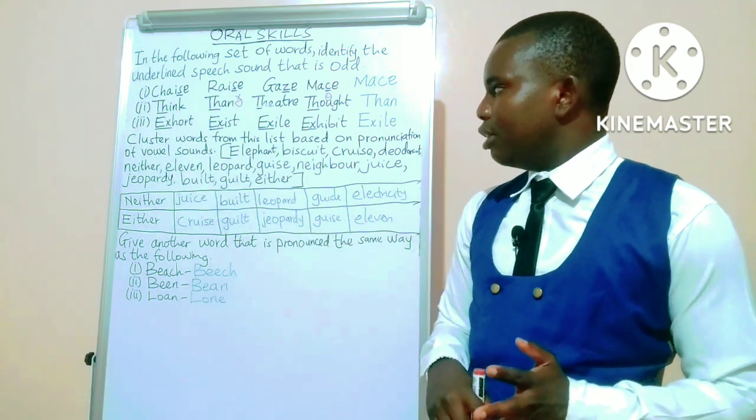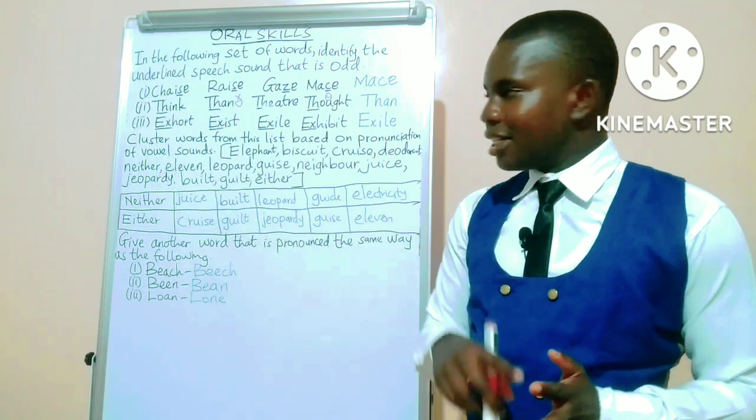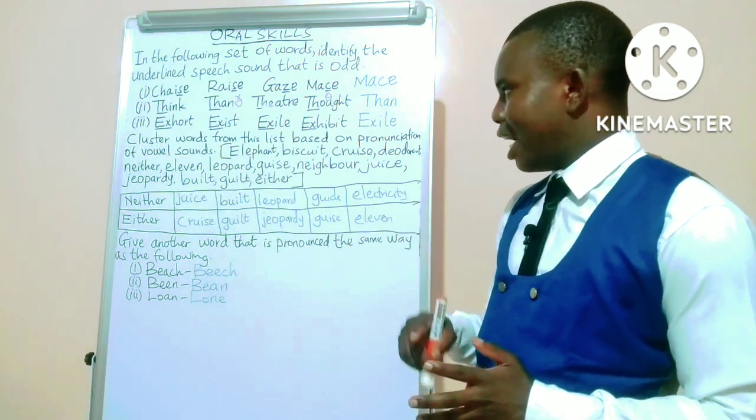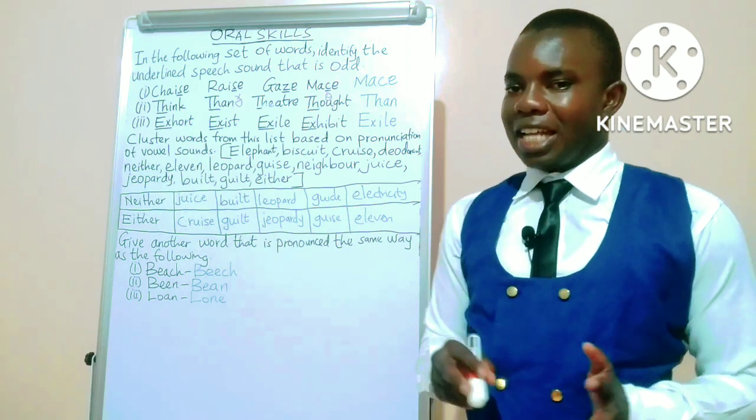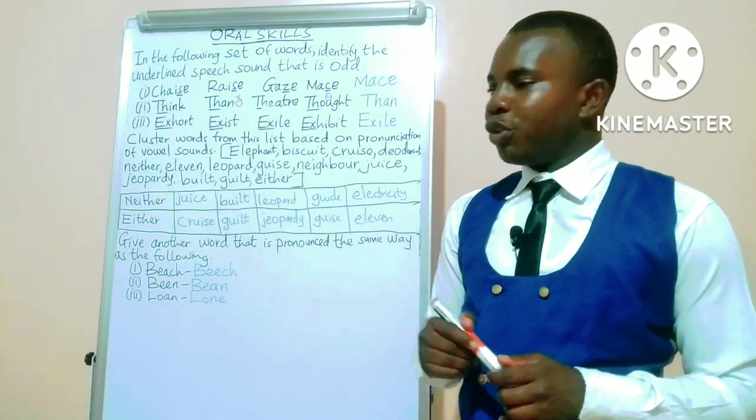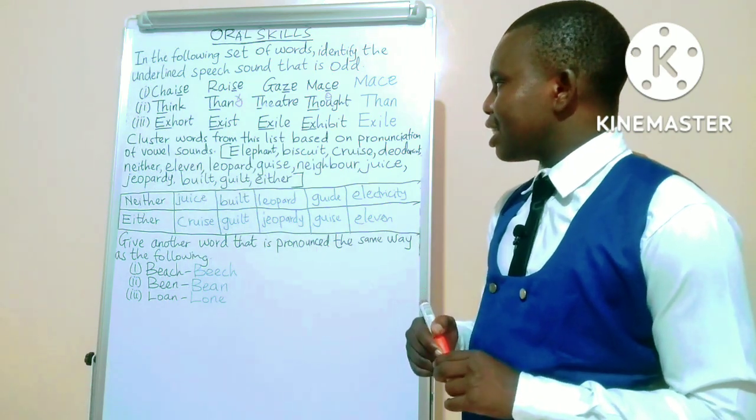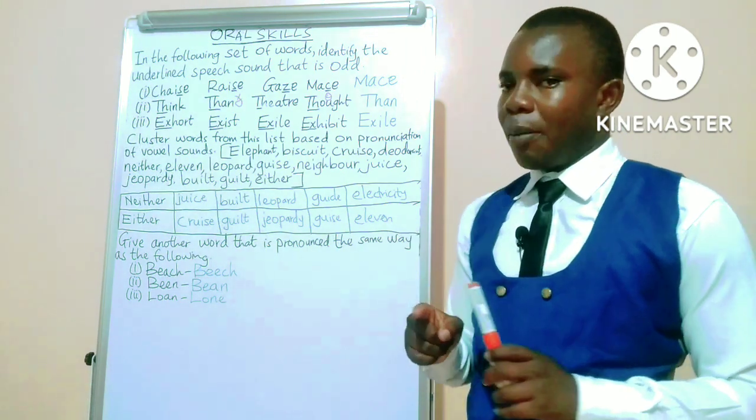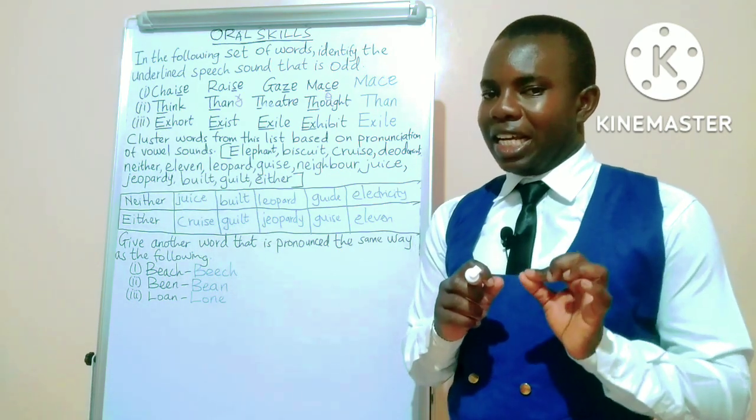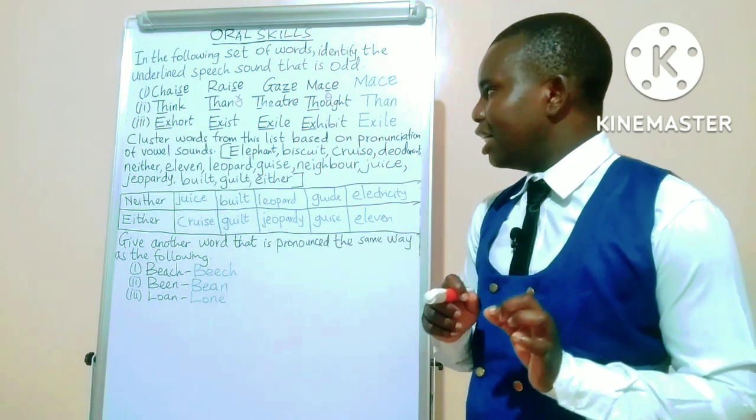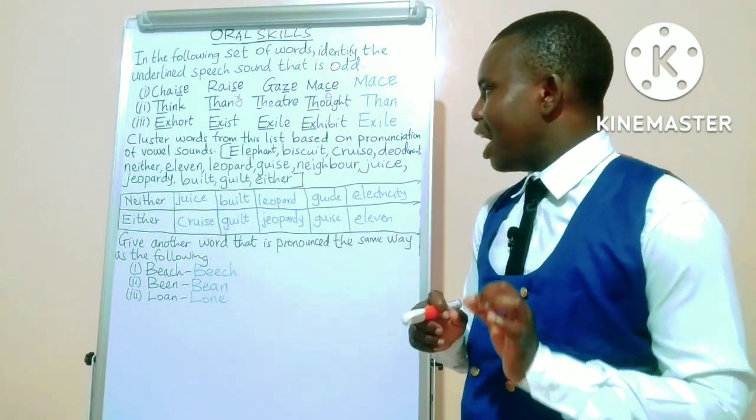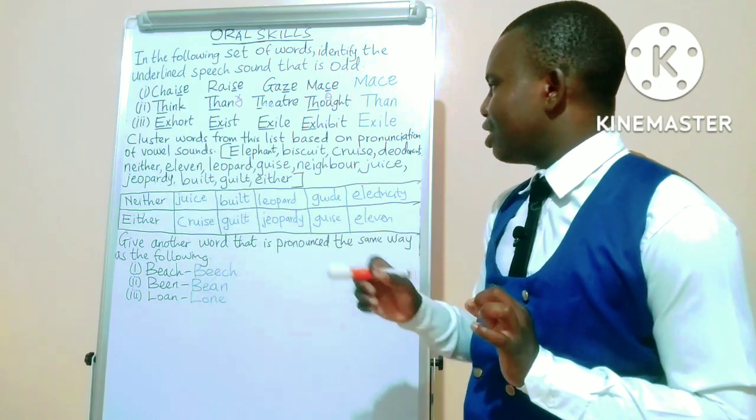In number three, we have the words hot, exist, exile, and lastly exhibit. The letters 'ex' in words apart from exile is read as /eks/ - exhaust, exists, and exhibit. So we have exile as the odd one out.